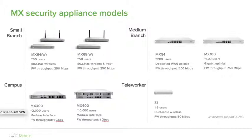MX security appliance models. There's an MX security appliance to suit every network, from the ultra-compact teleworker device supporting 5 users, to the MX600 which is capable of handling 10,000 users. The Z1 is an ideal device for ultra-small offices, telecommuters, or even as a remote-access, out-of-band management device. The MX64 is our most popular device, making up over 50% of all our security appliances shipped to date. The MX65 adds two PoE Plus ports and increases the overall number of gig interfaces from 5 to 12.